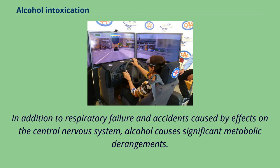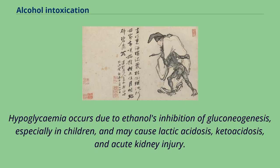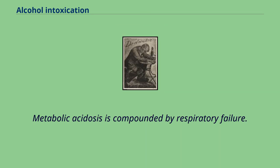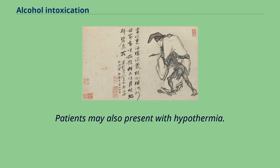In addition to respiratory failure and accidents caused by effects on the central nervous system, alcohol causes significant metabolic derangements. Hypoglycemia occurs due to ethanol's inhibition of gluconeogenesis, especially in children, and may cause lactic acidosis, ketoacidosis, and acute kidney injury. Metabolic acidosis is compounded by respiratory failure. Patients may also present with hypothermia.